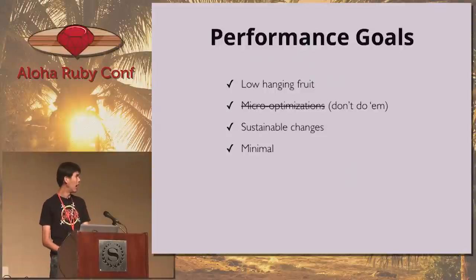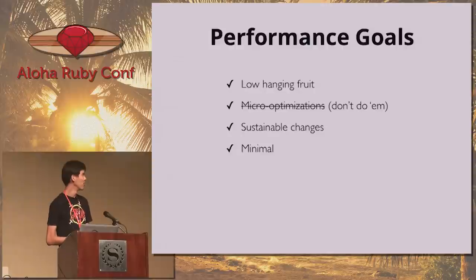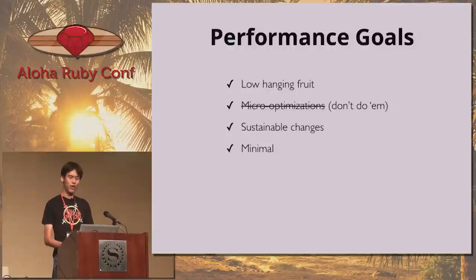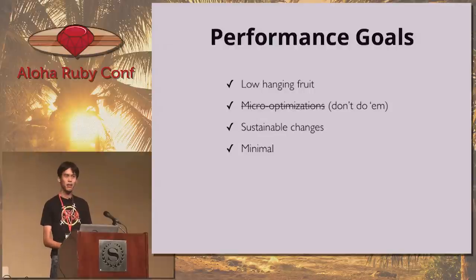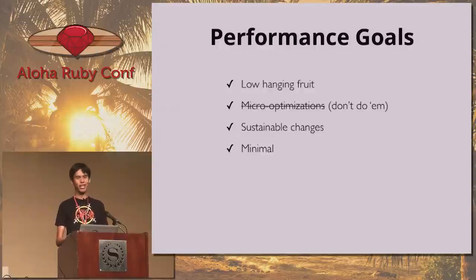Before I go into the talk, here's the things I keep in the back of my head whenever I think about performance problems. Whenever we optimize for performance, it should always be something that helps our end users. A lot of times we go after micro-optimizations where it's very cool technically, but it's not worth the level of effort. So it's important to figure out the lowest hanging fruit for performance problems in your project, and to make sustainable changes — changes that are relatively straightforward to make but easy to maintain in the long run. You don't want to come back six months later and be like, I have no idea why I did this, it's all broken now.